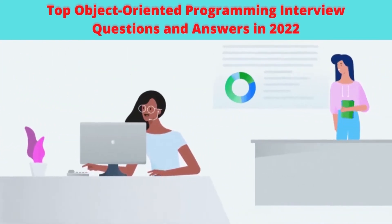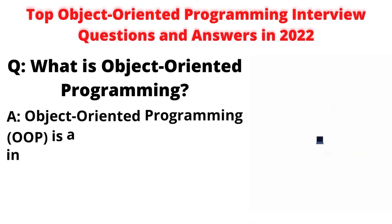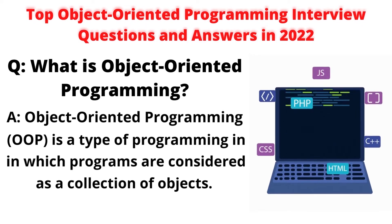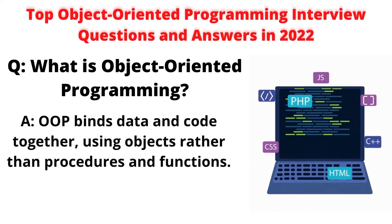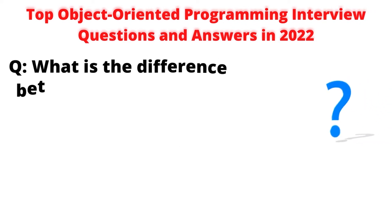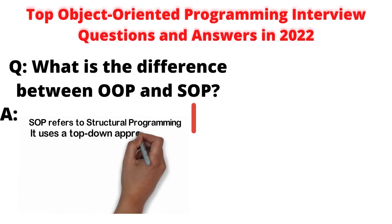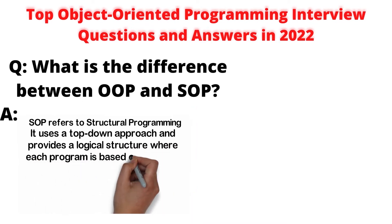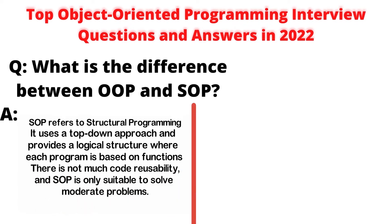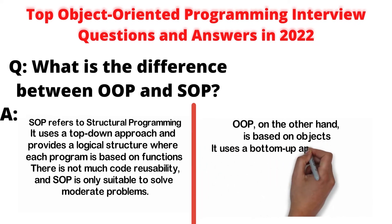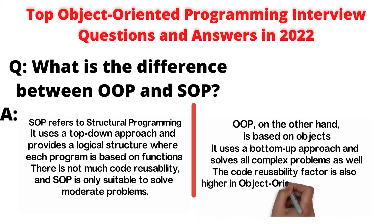Top object-oriented programming interview questions and answers in 2022. Question: What is object-oriented programming? Answer: Object-oriented programming is a type of programming in which programs are considered as a collection of objects. OOP binds data and code together using objects rather than procedures and functions. Question: What is the difference between OOP and SOP? Answer: SOP refers to structural programming. It uses a top-down approach and provides a logical structure where each program is based on functions. There's not much code reusability and SOP is only suitable to solve moderate problems. OOP, on the other hand, is based on objects. It uses a bottom-up approach and solves complex problems as well. The code reusability factor is also higher in object-oriented programming.